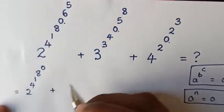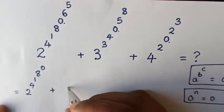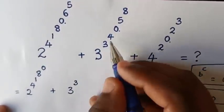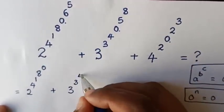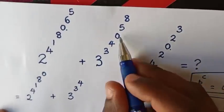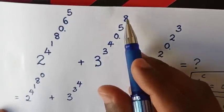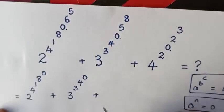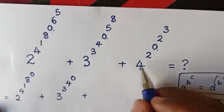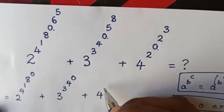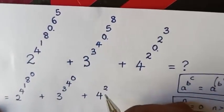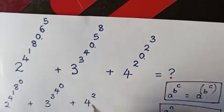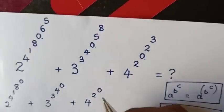Then plus 3 power of 3 power of 4, and then 0 power of 5 power of 8 is 0. Then plus 4 power of 2, and then 0 power of 2 power of 3 is 0.